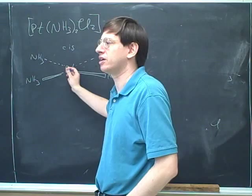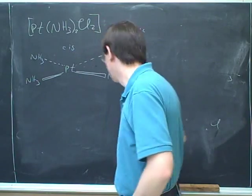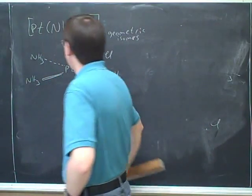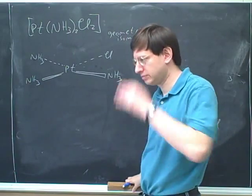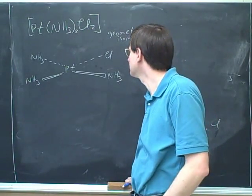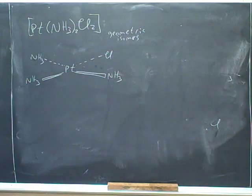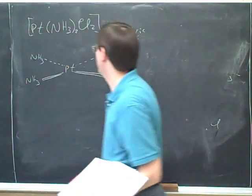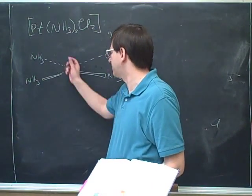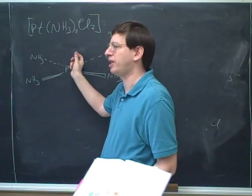But if you're asked to draw all the geometric isomers here, you should only draw one. In this case, there's only the one isomer. So not all compounds have geometric isomers. This has no geometric isomers. And so it would be meaningless to ask if this is cis or trans. Cis and trans don't apply to this.